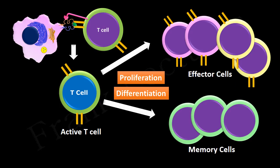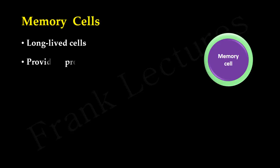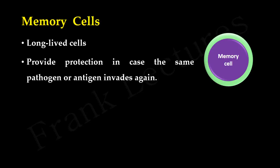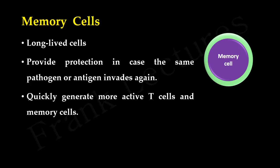Effector T-cells are short-lived cells. 90% of these cells die by apoptosis within a few days or few weeks. However, a population of activated T-cells also become memory T-cells, which are long-lived. Their main function is to provide protection in case the pathogen attacks again in the future. If the same pathogen or antigen enters the body again, memory cells can quickly proliferate and differentiate into more active cells and more memory cells. These memory cells are faster in response.